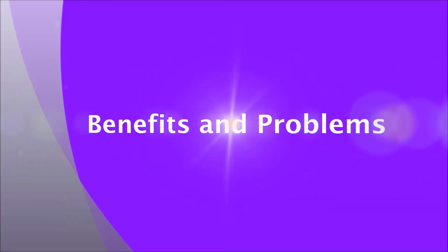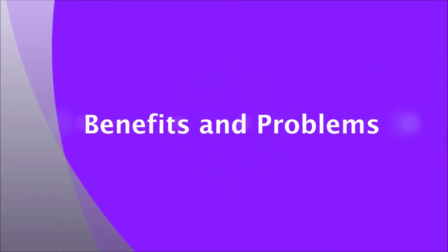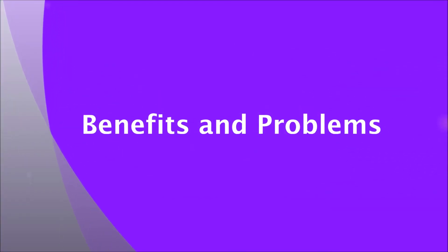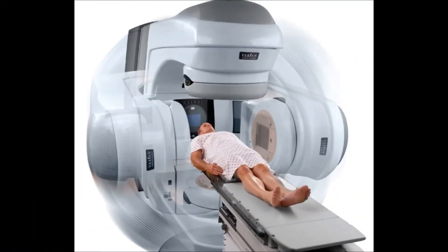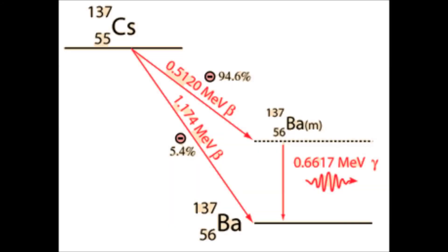Now let's weigh the advantages and disadvantages. CS-137 has evidently contributed to cancer treatment and its many methods. As for the radioisotope itself, it has a stable daughter product through its decaying and half-life process, which is barium-137.